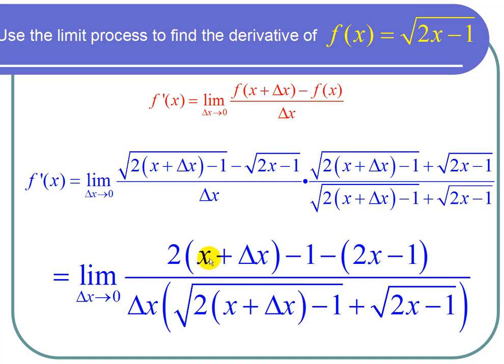And the denominator stays the same. So now let's simplify, I can multiply the 2 through, and I can multiply the negative through. And what I get on the top is 2x plus 2 delta x minus 1 minus 2x plus 1.